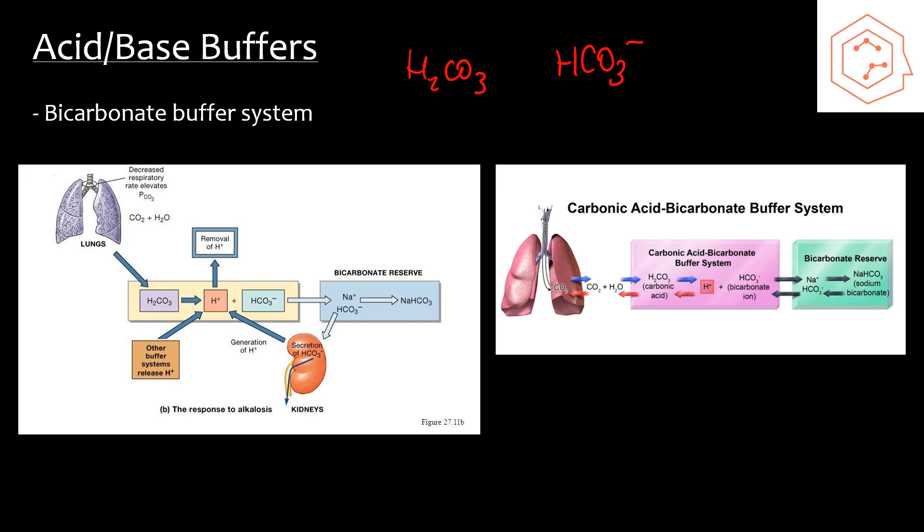A process that will acidify blood will be neutralized by the bicarbonate ions, and they will minimize the change in pH. But a process that will alkalize the blood, so increase the pH of blood, will be neutralized by the concentration of carbonic acid that is present.